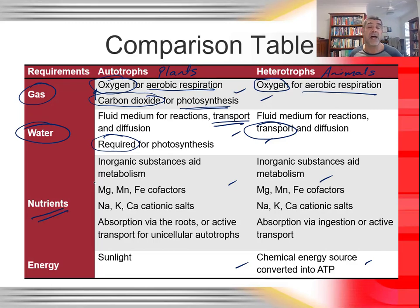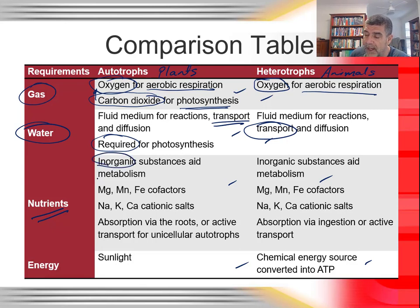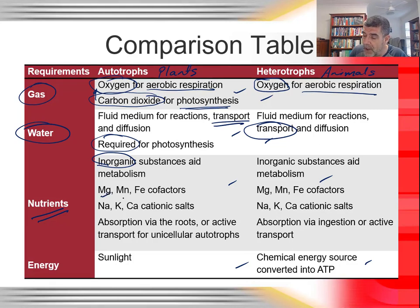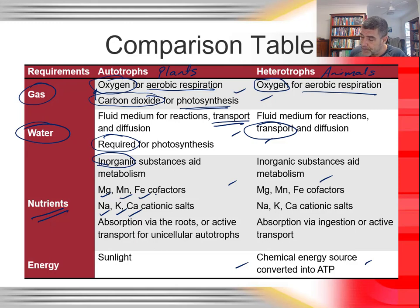When it comes to nutrients, there are a very large number. Because plants are autotrophs, they produce some key organic compounds themselves, but they need inorganic substances to assist with photosynthesis and other metabolic processes. Magnesium, manganese, iron, sodium, potassium, and calcium are all very important ions required by plants. These are also required by animals — the same cations, though not necessarily in the same proportions, are needed for important chemical reactions.